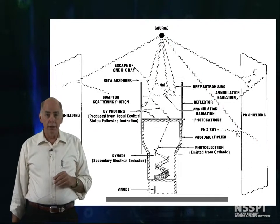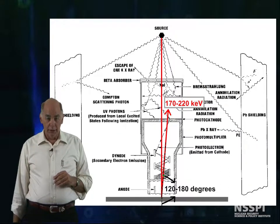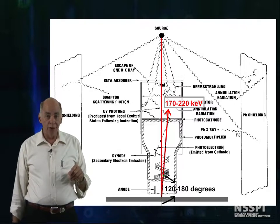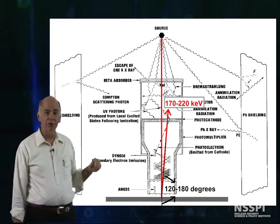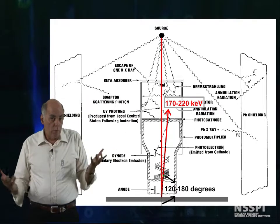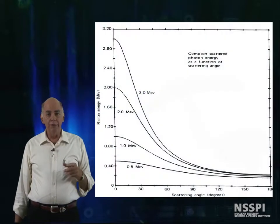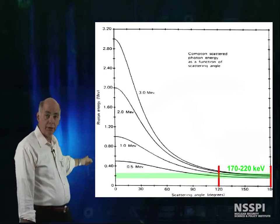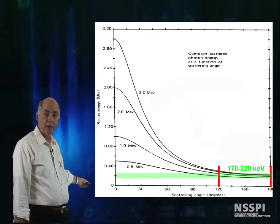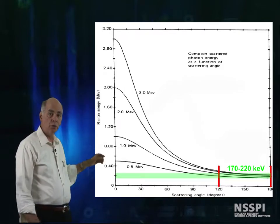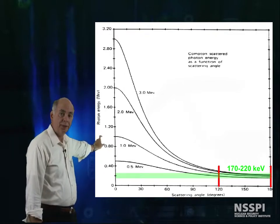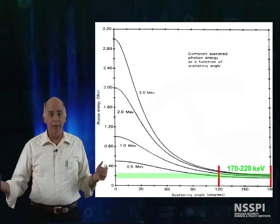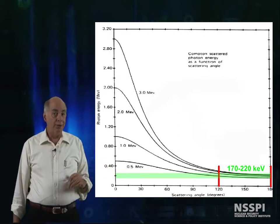And finally, there are backscatter effects. If scattering material is present behind the detector, the returning gamma rays create a pseudo-peak. Why does this happen? Because of the physics of Compton scatter, gamma rays from 5 MeV to a few hundred keV, all return with energies between about 170 to 220 keV for scattering angles between 120 and 180 degrees, as you can see here.